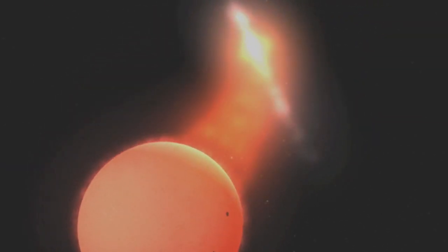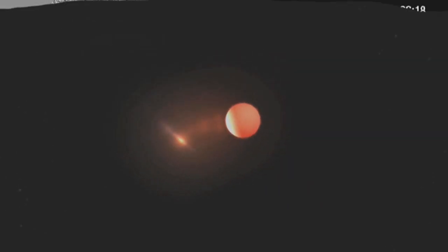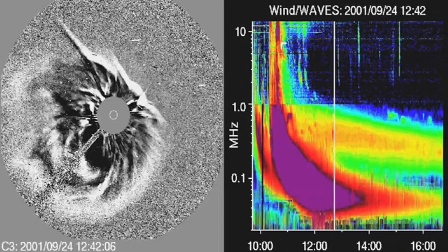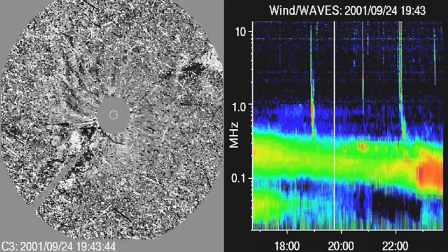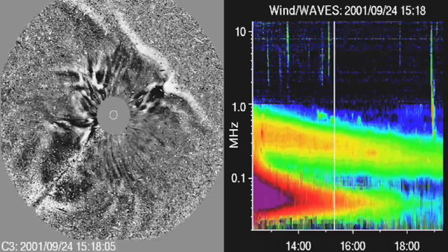Even our own sun creates radio waves. Take a look at this. This is a solar flare on our sun. On the right, you see radio waves. When the sun flares, so do the radio signals.